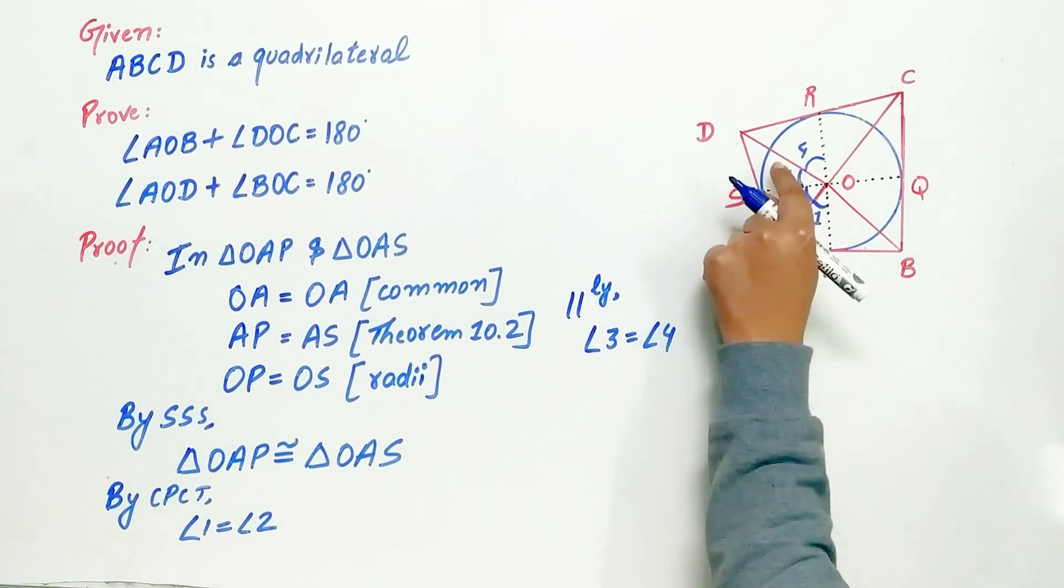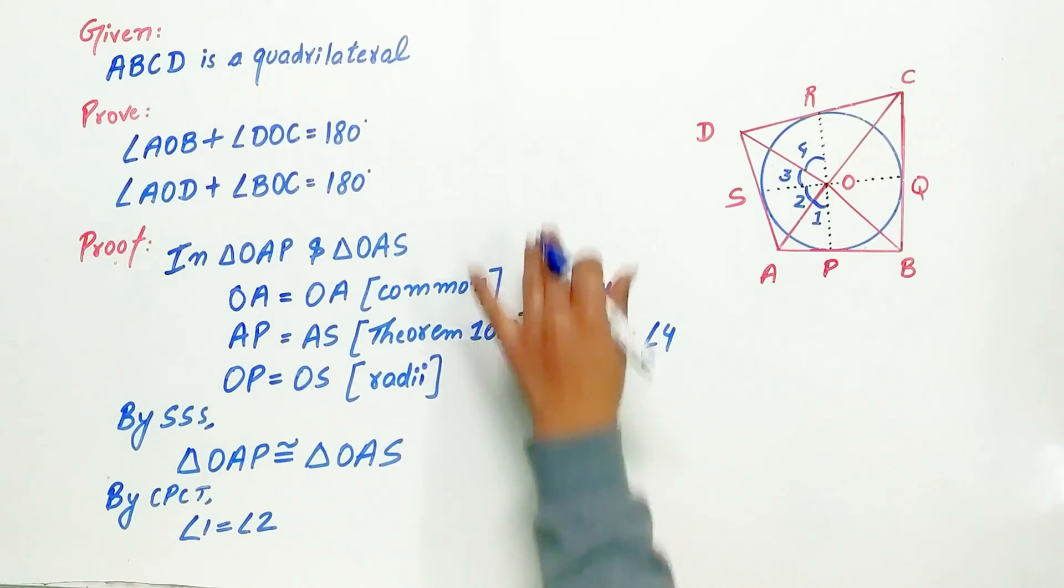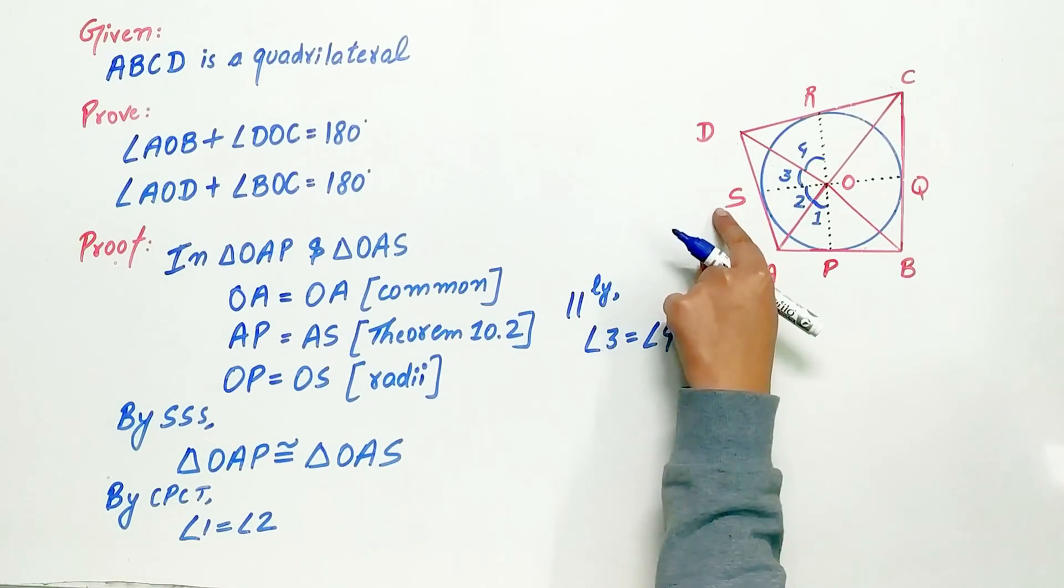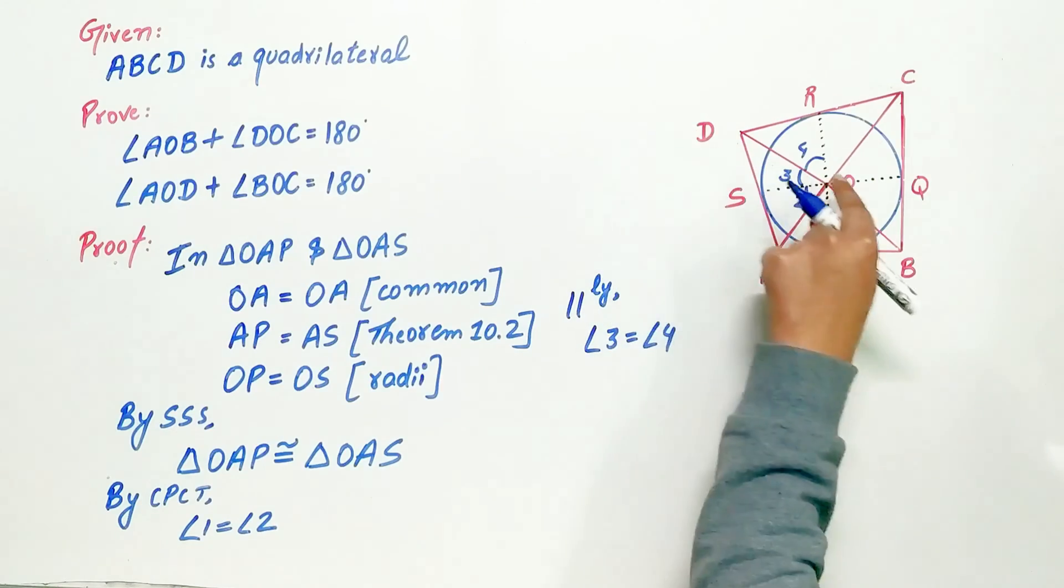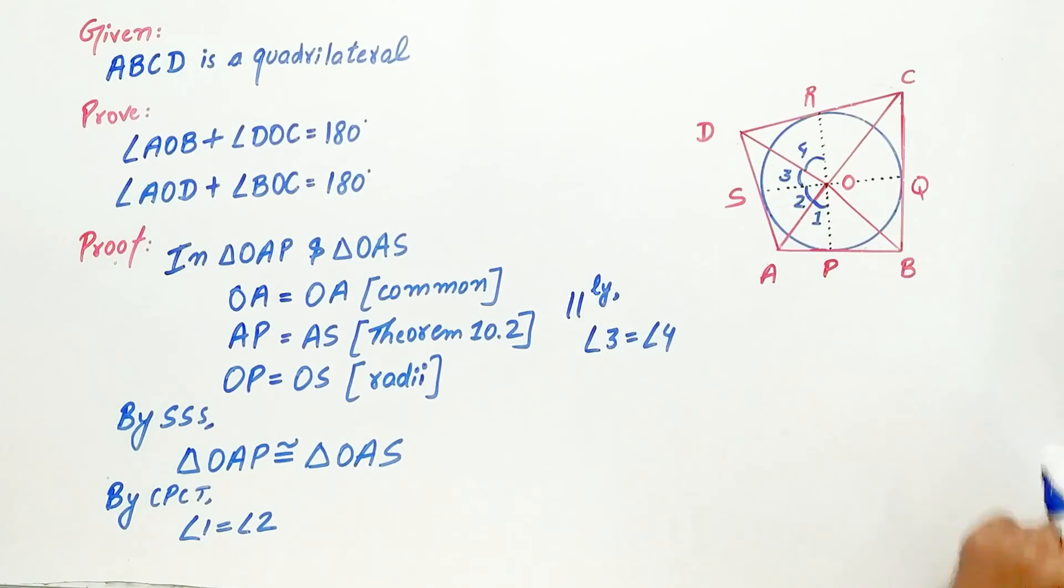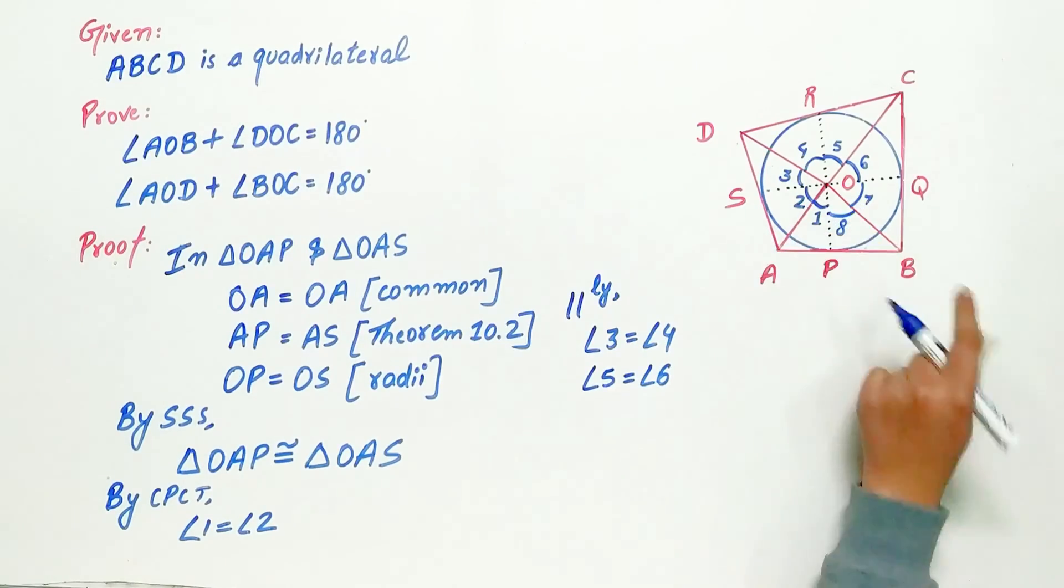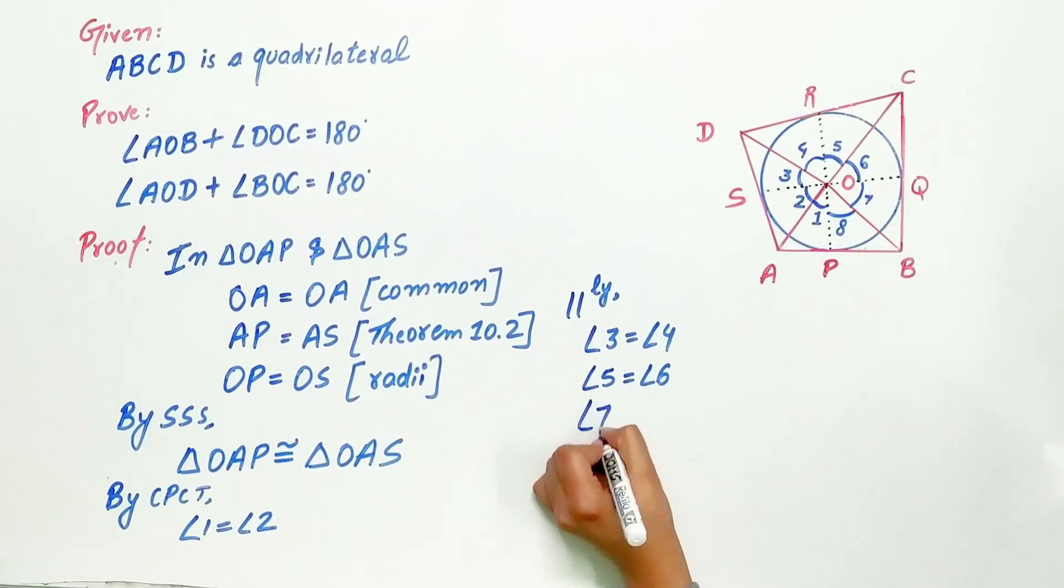Similarly, angle 3 equals angle 4 by the same procedure, this time taking triangles OSD and ORD. Angle 5 equals angle 6, and angle 7 equals angle 8.